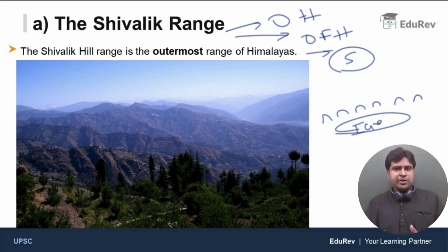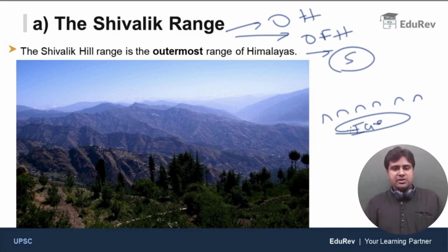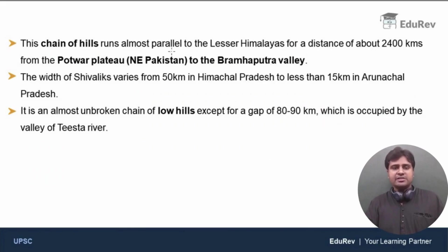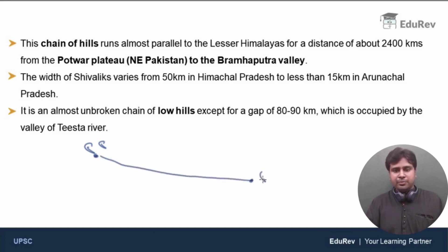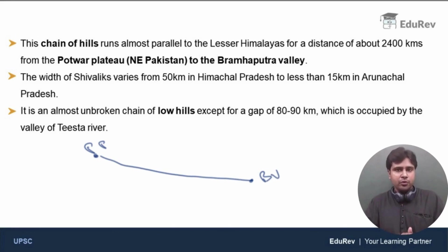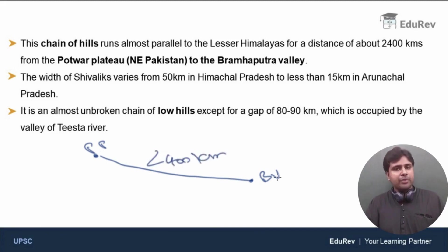Shivaliks are an almost unbroken, continuous chain of low hills above the Indo-Gangetic Plain. We have the Potwar Plateau here in northeastern Pakistan — find it on the map, it will be very useful. From Potwar Plateau in northeastern Pakistan to the Brahmaputra Valley, the Shivaliks stretch as a chain of low hills for around 2,400 kilometers, running more or less parallel to the Middle Himalayas.